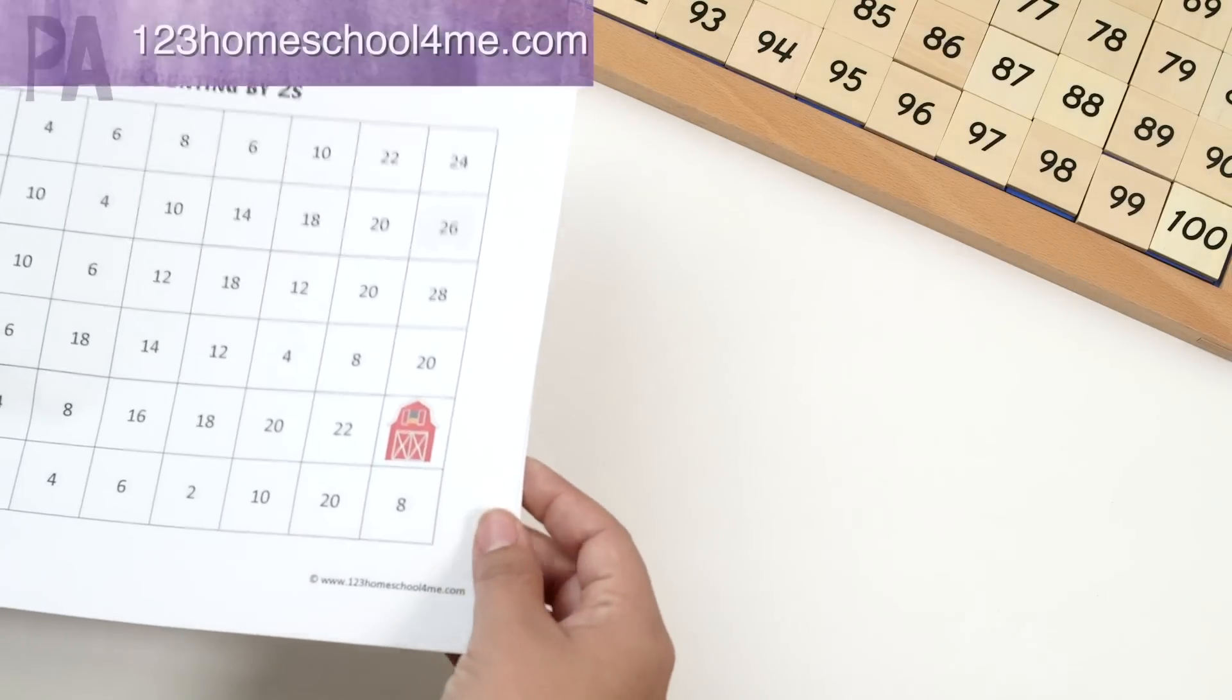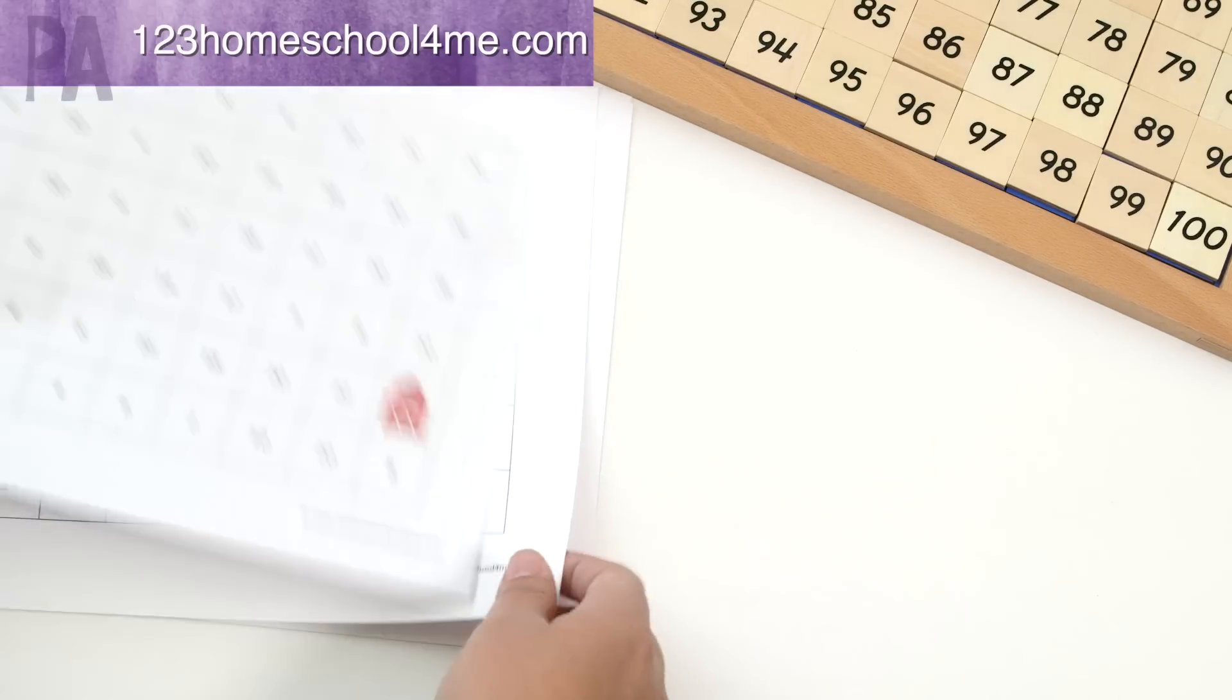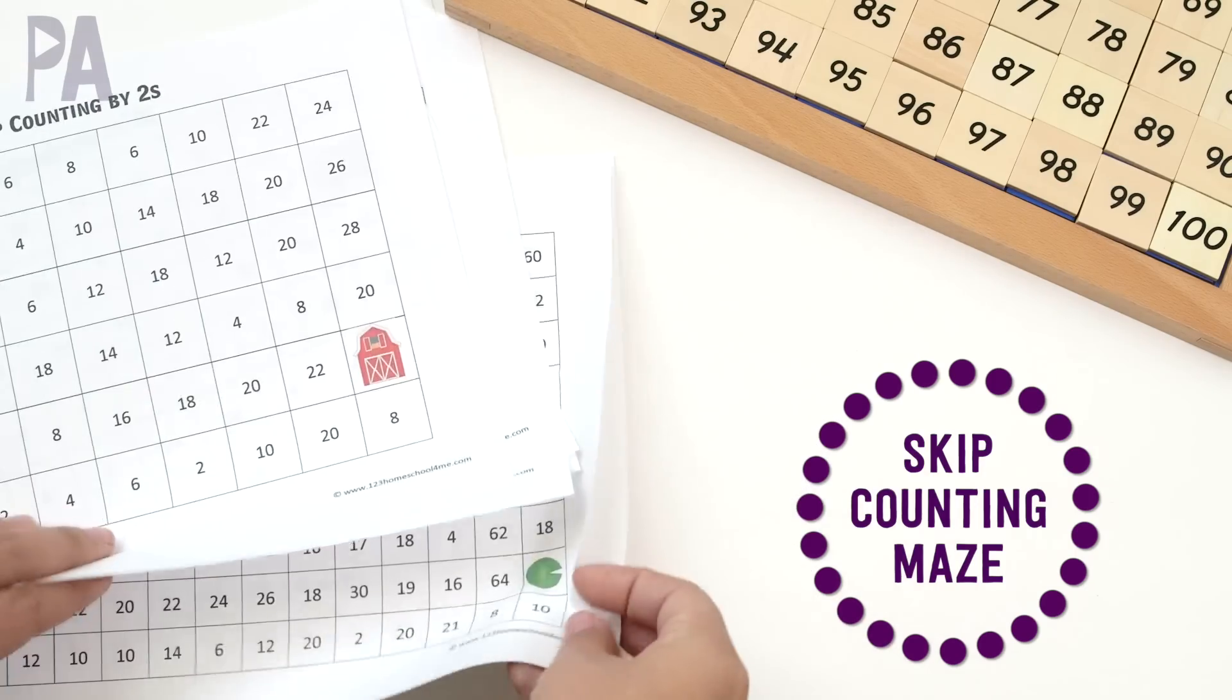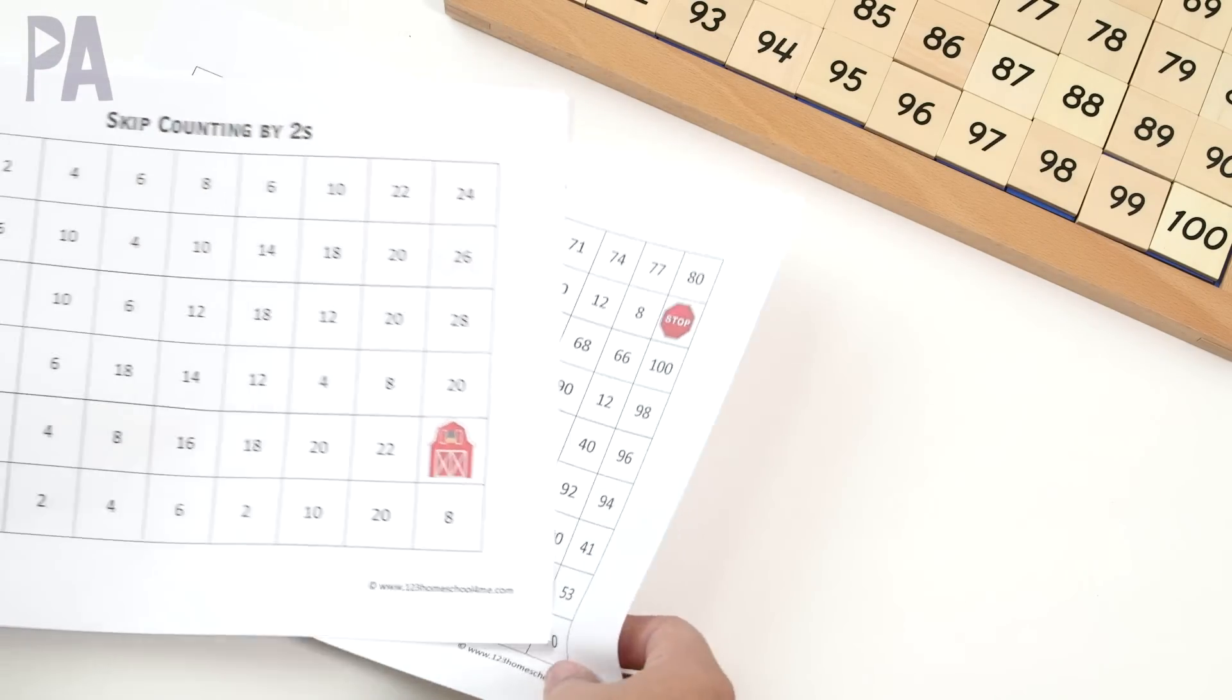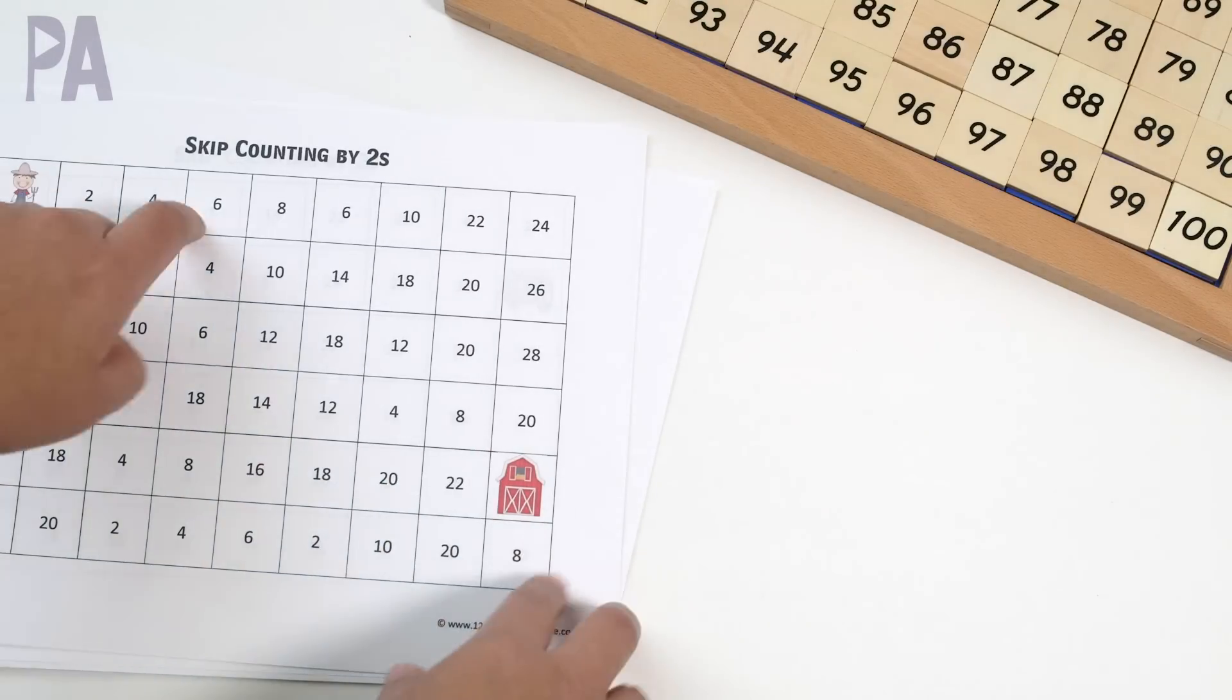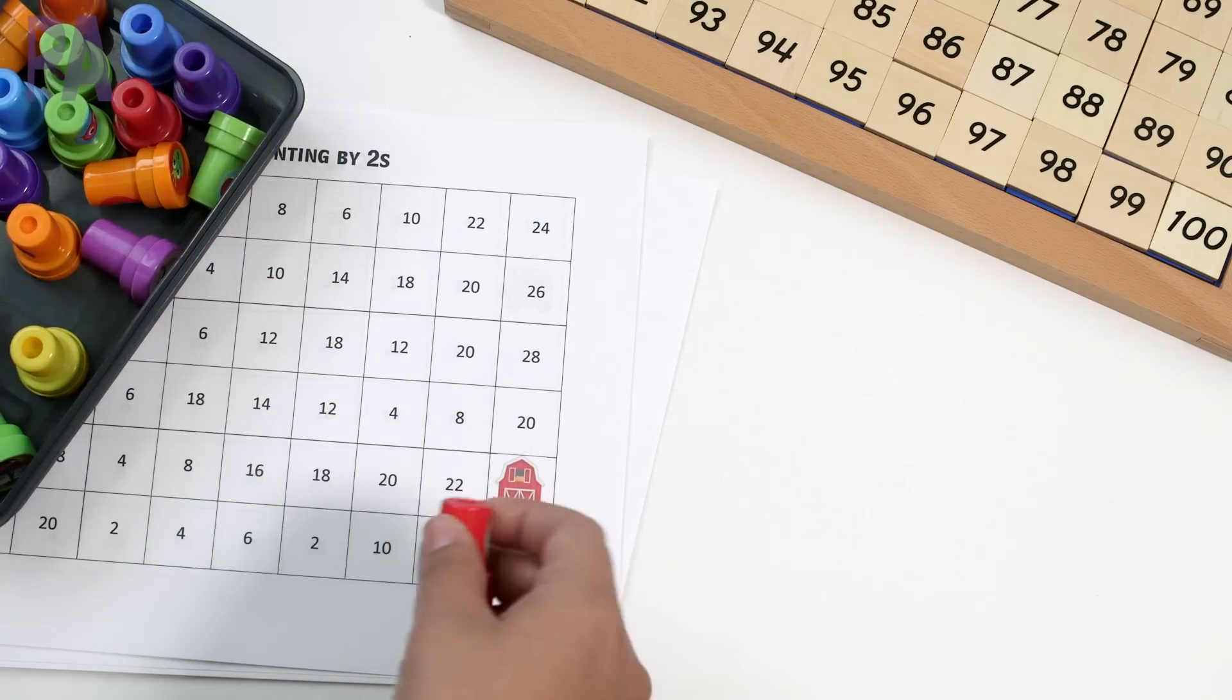And then speaking of skip counting, 123homeschool4me.com has these really great skip counting mazes. So I have the twos printed out here and they get progressively harder as you go through the sheets. You can see the difference between the first one and the second one, so a lot more to do. Basically you are going to follow the path to get the farmer all the way to the barn by skip counting. You can do this by coloring each individual square or you can get one of those little daubers. I have some stamps here that you could stamp and go all the way across if you wanted to.